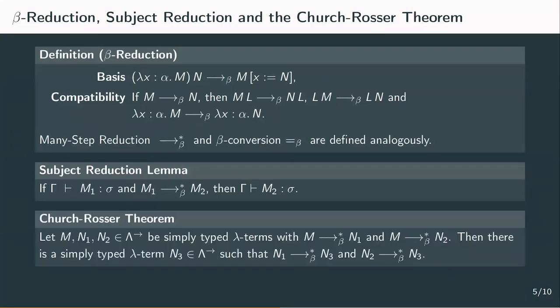The Church-Rosser theorem also holds in the simply-typed lambda calculus. Simple types maintain many nice properties from the untyped lambda calculus. A major difference, and actually an improvement compared to the untyped lambda calculus, arises once we look at normalization.